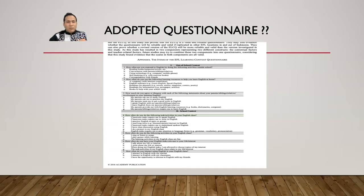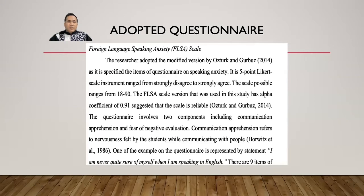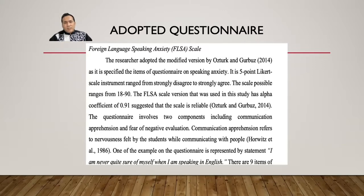When you adopt a questionnaire, you must put the source — write down the author and the year. In your chapter three, you put an explanation like 'This research adopted the modified versions of...' followed by the original researcher's name.